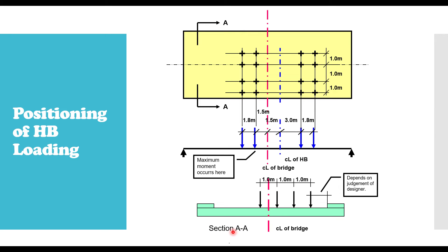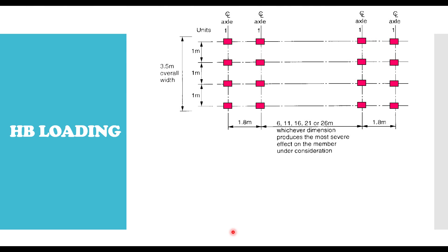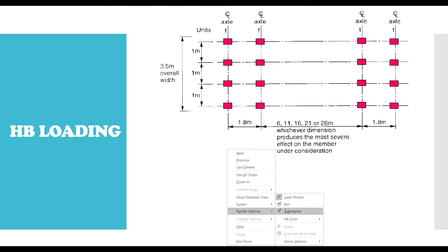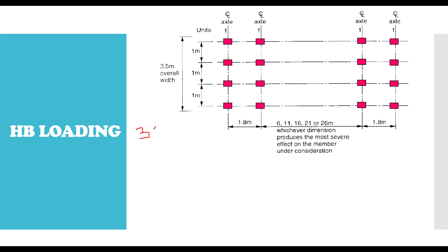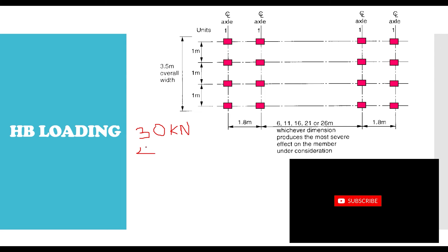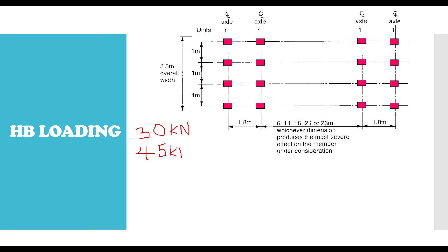This is all about the HB loading. HB loading is given in units, and one unit of HB load is equivalent to 10 kN per axle. Let's take an example: the minimum HB load you can apply according to the code is 30 units, but the most common value applied in practice is 45 units. So if you apply 45 units of HB load, that gives 45 times 10, which is 450 kN per axle.